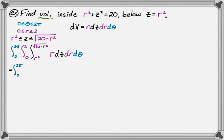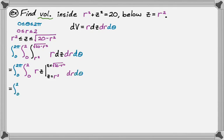Integrating with respect to z by the fundamental theorem just gives r times z evaluated from z equals r squared to z equals radical 20 minus r squared. Carrying that down, we get r times the quantity radical 20 minus r squared minus r squared, still with dr d theta remaining.